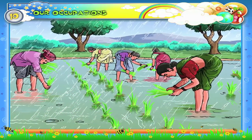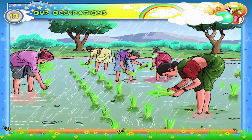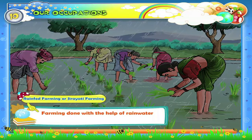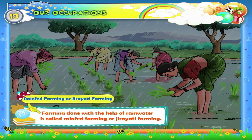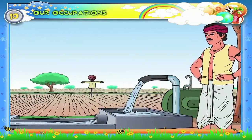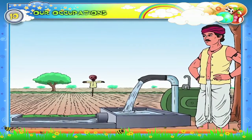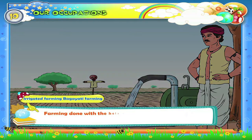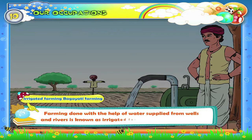In some places, rainfall is more. In such places, farming is done with the help of rain water alone. In some places, rainfall is less. In such places, farming is done with the help of water supplied from wells and rivers. Supplying water for agriculture in this way is called irrigation. Such farming is known as irrigated farming or bagayati farming.